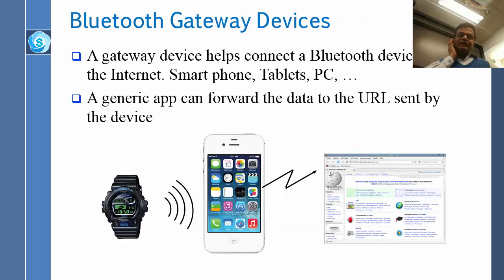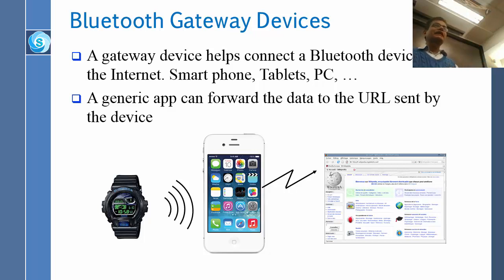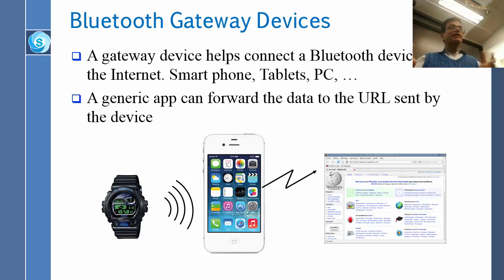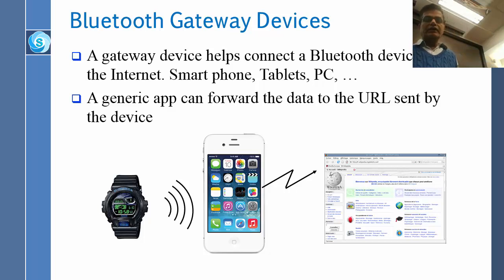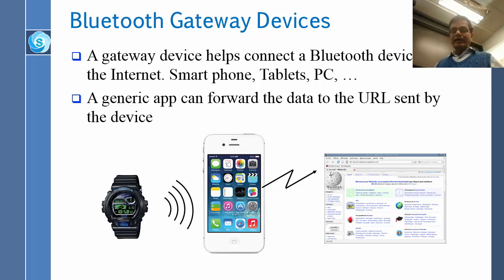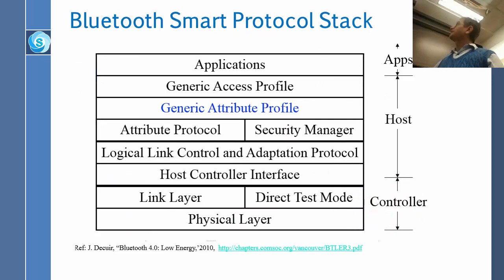The next thing is gateway devices. We mostly need gateways now, because if you want to talk to the rest of the world, Bluetooth will not reach the rest of the world. So you talk Bluetooth to something that becomes a gateway — a router to the rest of the world. In this case, a cell phone, a tablet, a laptop, or whatever. You connect to that, and then it connects to the rest of the world.